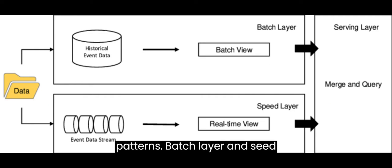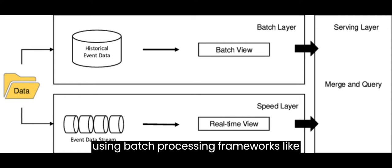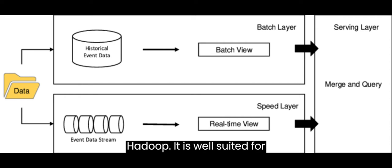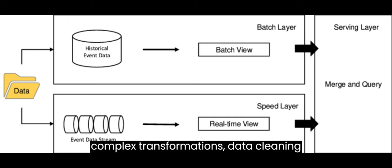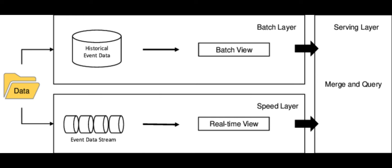Batch layer and speed layer. Batch layer: This layer is responsible for processing large volumes of historical data, typically using batch processing frameworks like Hadoop. It is well-suited for complex transformations, data cleaning, and aggregations.